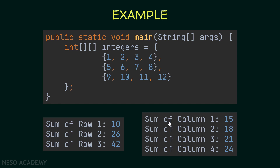The second program should display the sum of the first column is 15, then the second one is 18, then 21, and the last one is 24. For example, this over here is the third column — 3 plus 7 plus 11 is equal to 21.